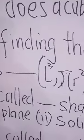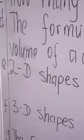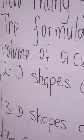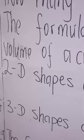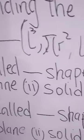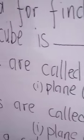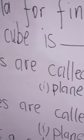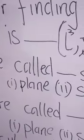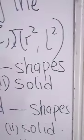F: 3D shapes are called ___ shapes. Options: plane shapes, solid shapes.